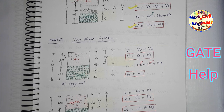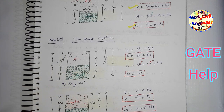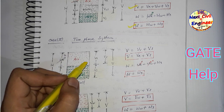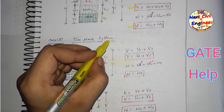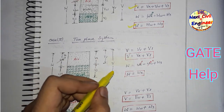यहाँ पे point to be noted है: soil is not possible in single phase — soil does not exist in single phase। हम लोगों ने three phase, dry soil two phase, और fully saturated soil two phase देखा, लेकिन one phase system की कहीं बात नहीं की। एक और important point: without voids, soil does not exist — बिना voids के soil exist ही नहीं करेगी।